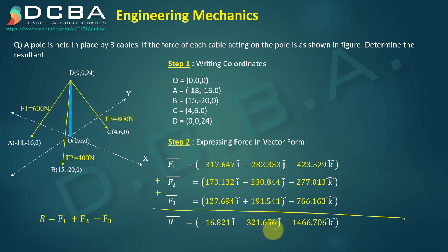You will get -16.821 i cap plus j components -321.656 j cap plus k components -1466.706 k cap. From this resultant, the coefficients are very interesting. You can see that for k cap we are having the highest value of 1466.706. The reason for this is it indicates that we are having the greatest force in downward z axis.